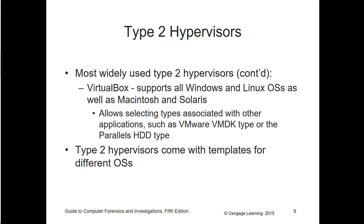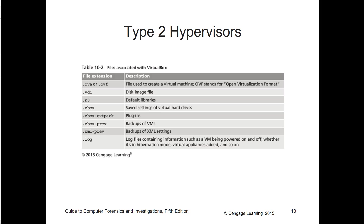Among the most widely used hypervisors, VirtualBox is one of the big ones. Type 2 hypervisors come with templates for different operating systems, so you can load a template for Windows 7, Windows 8, Ubuntu, or anything else. Each type of hypervisor has its own file associations — here are the file associations for VirtualBox.